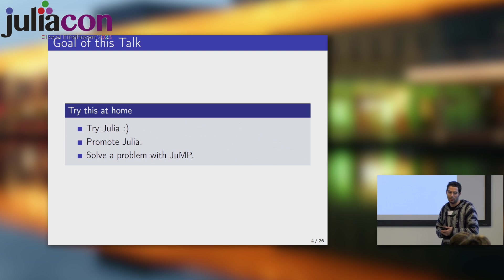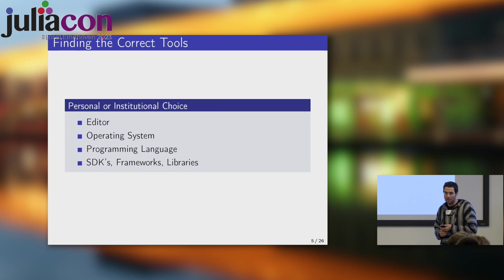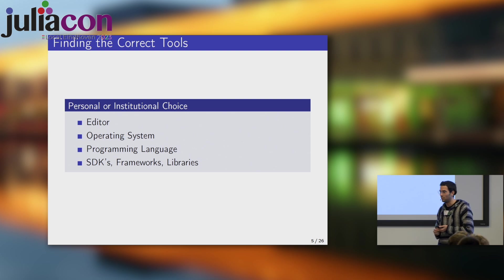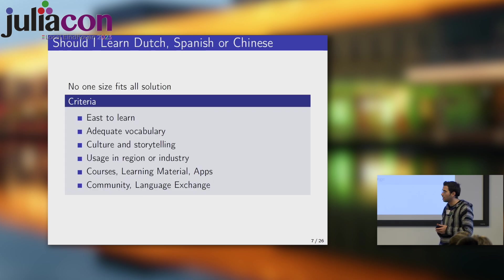The goal of this talk is for you to maybe try this at home as well. Some of you might write Julia, others might not. If you want, you should try using and solving more optimization problems, because they're widely applicable. Finding the correct tools is a never-ending quest for me as a programmer — I've spent time writing my own editor, choosing an operating system, and in this talk, finding the programming language which makes me productive in technical computing.